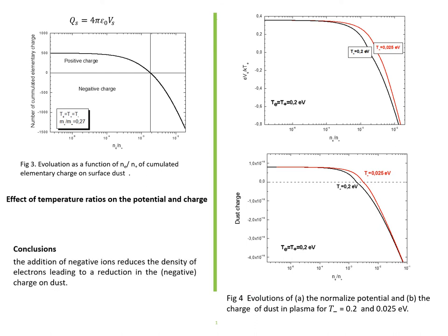The conclusion, we can conclude that the addition of a negative ion reduces the density of electrons leading to a reduction in the negative charge on the dust. Thank you for your attention.